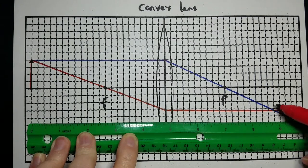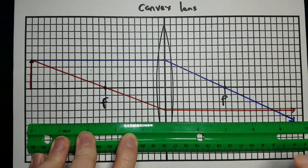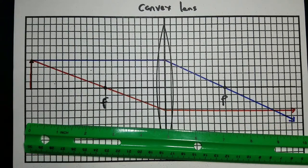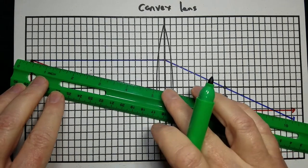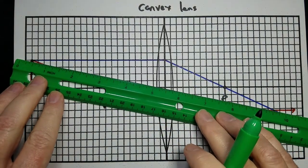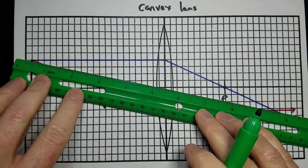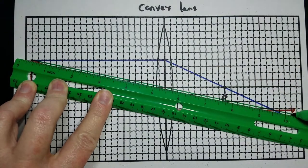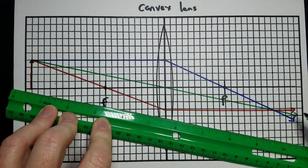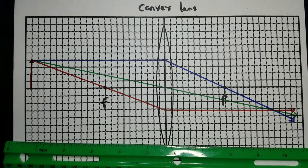Now we already know where the image is going to be located — right there. You only need two rays to actually locate the image, but there are three that you can draw. If things are drawn to scale, you can use all three. The third ray goes from the top of the object through the very center of the lens. If it goes through the center of the lens, it doesn't refract at all — it just keeps going forward. If we get it all lined up right, all three should cross at the same location, and that's where our image is going to be.